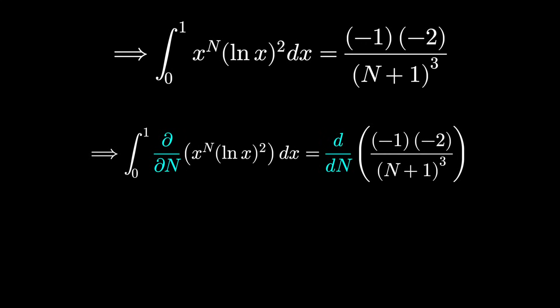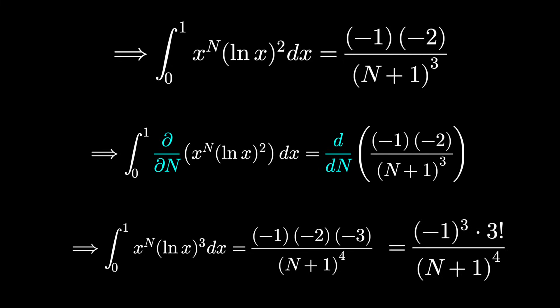Keep taking derivatives like this. Our third derivative, we'd have x to the n, ln x cubed, on the left-hand side, and on the right, minus 1 cubed times 3 factorial over n plus 1 to the fourth. See if you can notice the pattern.